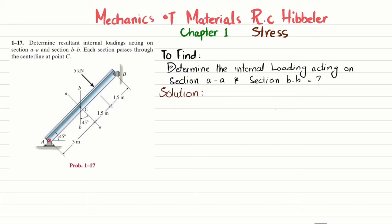You can see this is a beam having a pin support at point A and a roller support at point B, and at point C we have a load of 5 kilonewtons. You have to find the internal loading in section AA by cutting the beam there, and then cut the beam at section BB to find the loading at point C. Both sections pass through center point C.